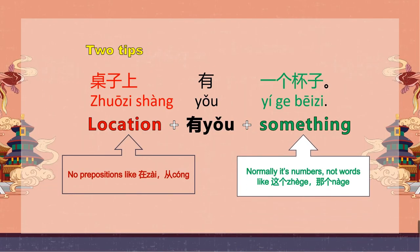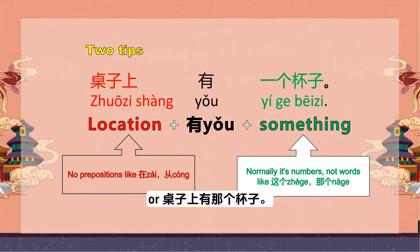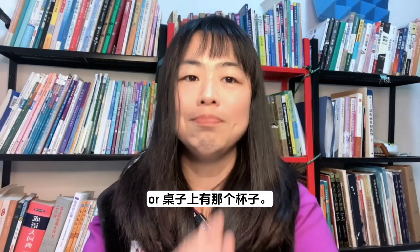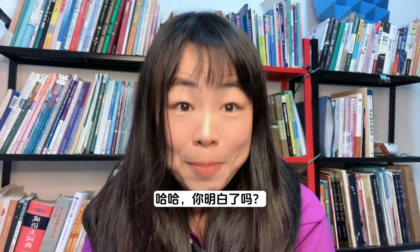第二个tip是：in the object part — the something part — normally there is a number, like 一个、两个、三个, or 几个、多少个. But you shouldn't say 桌子上有这个杯子 or 桌子上有那个杯子. 这个不对。你明白了吗？